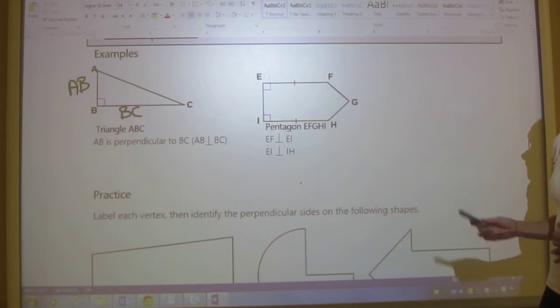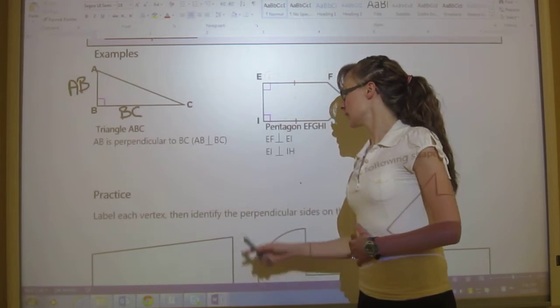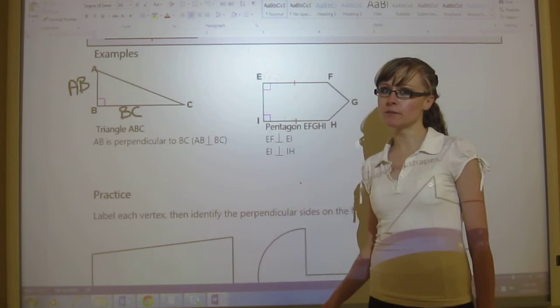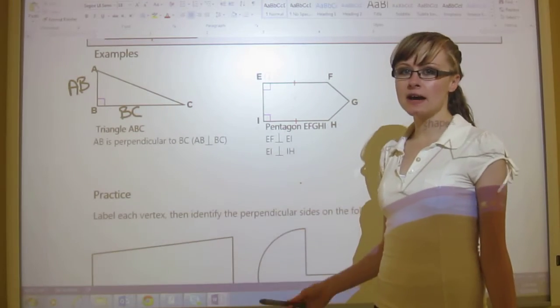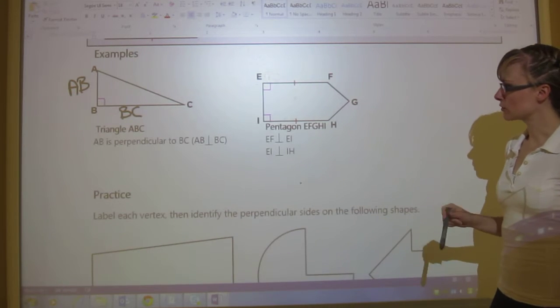Next one, we've got a pentagon. Now remember a pentagon is a shape that has five sides. They don't have to be equal, but it has to have five straight sides. So straight lines, and it has to be a closed shape.